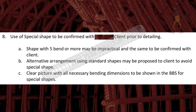Point 8. Use of special shape to be confirmed with client prior to detailing. Shape with 5 bends or more may be impractical and the same to be confirmed with client. Alternative arrangement using standard shapes may be proposed to client to avoid special shape. Clear picture with all necessary bending dimensions to be shown in the BBS for special shapes.